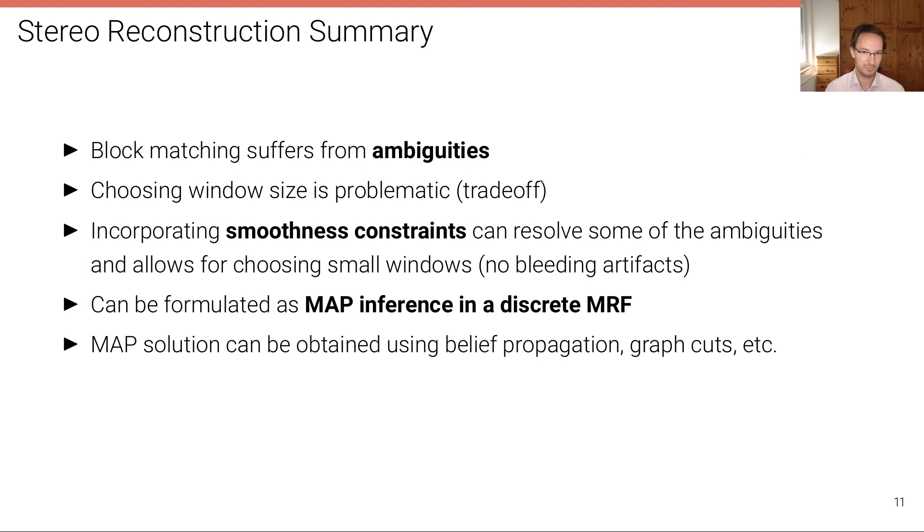And this can be formulated as MAP inference in a discrete MRF. All the results that I've shown on the previous slides have been inferred using the max-product algorithm. So this MAP solution can be obtained using this max-product algorithm, the belief propagation algorithm or graph cuts or any other algorithm out of our toolbox of inference algorithms in discrete graphical models. And we've seen that integrating recognition cues like detecting objects and trying to infer objects jointly with the disparity map can further regularize the problem and help overcoming very strong ambiguities.